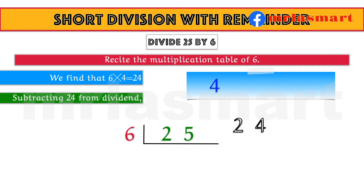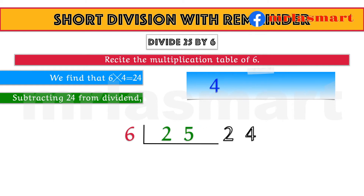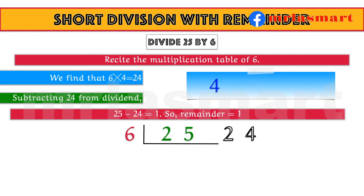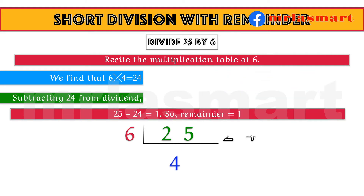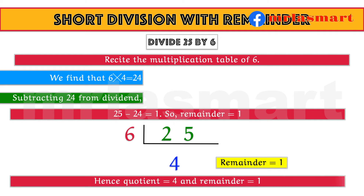Subtracting 24 from the dividend. 25 minus 24 equals 1. So, remainder equals 1. Hence, quotient equals 4 and remainder equals 1.